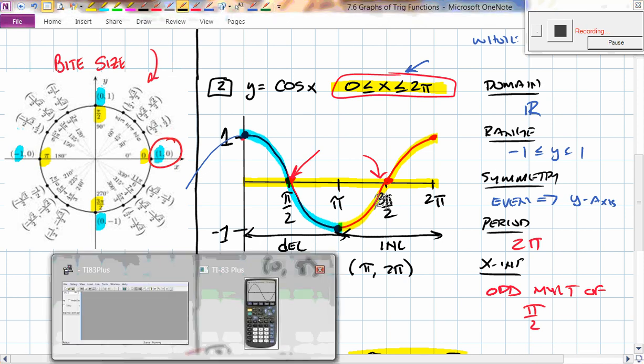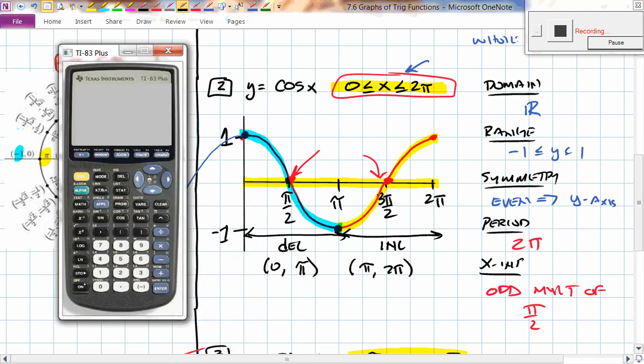And to graph it on the calculator, we can keep our window exactly the same, and we can just go back to y equals and punch in a cosine curve right below it. And then we can compare both curves side by side. So, what do you guys notice? They're the same, except one's just been moved over. Exactly right. So, that's called a phase shift, and we'll talk about that later on. And it's been moved over by exactly π/2, which is 90 degrees.